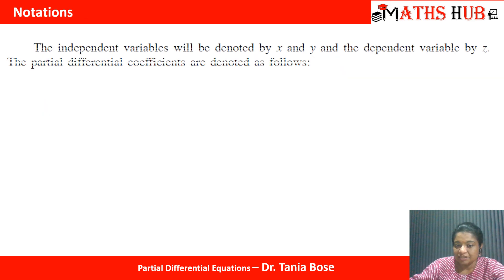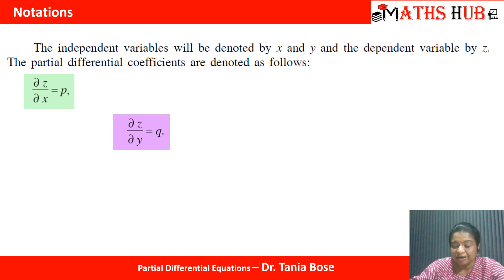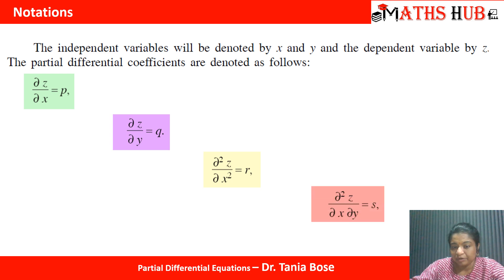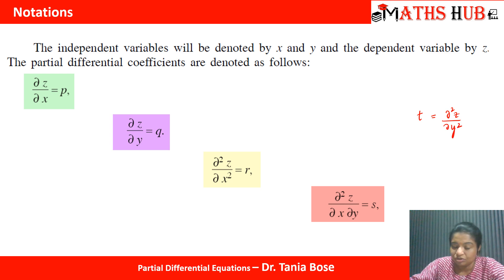Now let us go through the standard notations we will follow throughout this video series. We assume independent variables x and y and dependent variable z. The first-order partial derivatives: del z/del x = p and del z/del y = q. The second-order derivatives: del²z/del x² = r, del²z/(del x del y) = s, and del²z/del y² = t. These five notations will be used throughout.